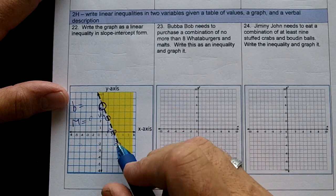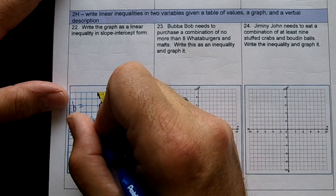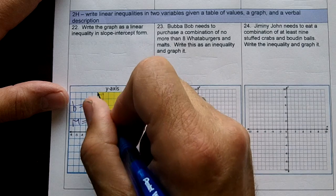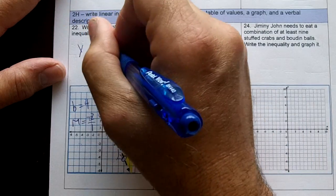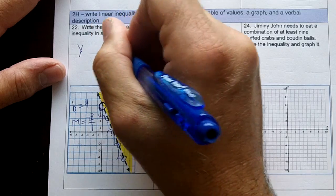So from every grid point, you go down two over one, so it's going to be a negative two over one, and my y-intercept's four. So that equation is going to be y equals negative two x plus four.